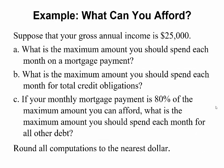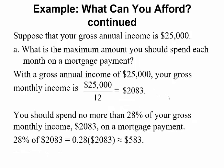Here's an example. Suppose your gross annual income is $25,000. What is the maximum amount you should spend each month on a mortgage payment? If your gross annual income is $25,000, divide by 12 — you're making $2,083 per month. You should spend no more than 28% of this on a mortgage payment. So 28% of $2,083 is $583. That's the max you should spend per month on a mortgage payment.